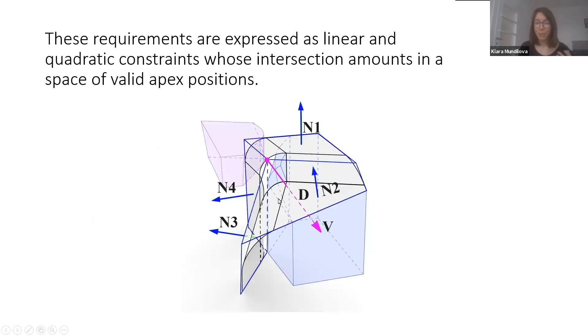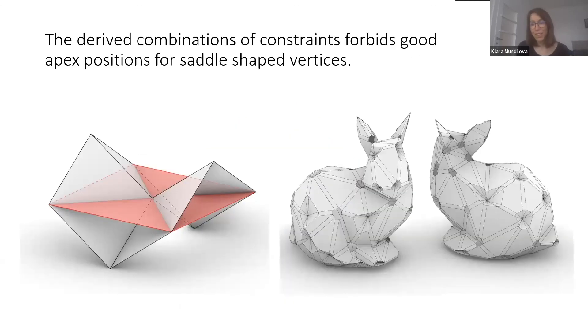Ultimately, we can express all those constraints in terms of linear and quadratic constraints, and we find valid and feasible apex positions in this space of valid constraints. However, unfortunately, we cannot find good apex positions for saddle points. Those are excluded, and this is why the bunny has a couple of holes in it.